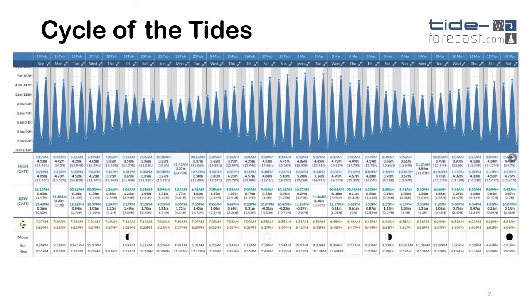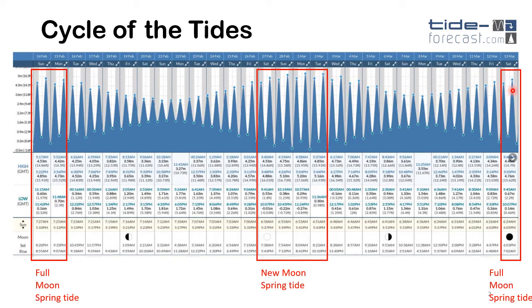Cycle of the tides. The tides are governed by the gravitational forces of the moon and the sun. Here we have the tides across a monthly cycle for Seton Karoo, and we can see that spring tides move to neaps, back to spring, to neaps again, and finally we move back towards spring tides.